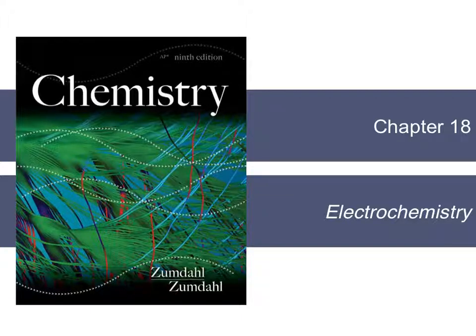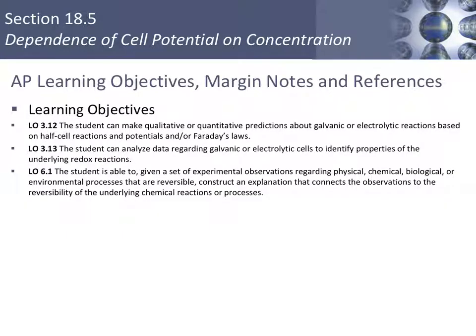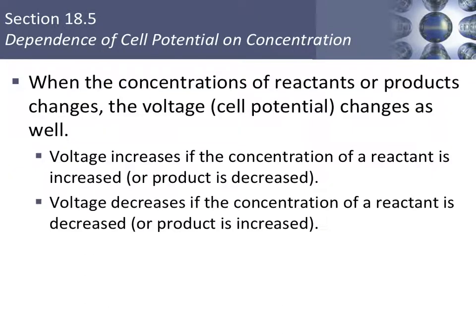In section 5 of chapter 18, we are looking at the dependence of cell potential on concentration. So far, we have been looking at standard cell potentials, where the concentration of the solutions is 1 molar. When the concentrations of the reactants or products are changed, then the voltage, the cell potential, will change as well.